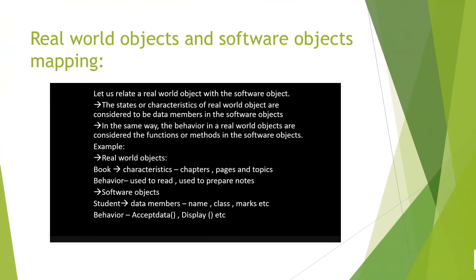Now let's look at real world object and software object mapping. The states or characteristics of a real world object are considered to be data members in software. The behavior of a real world object is considered to be functions or methods in OOP. Data members include types like integer, double, and string in upcoming chapters.